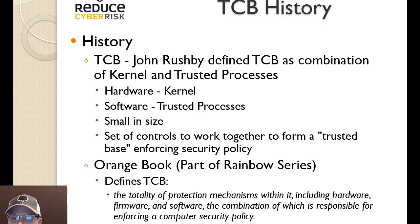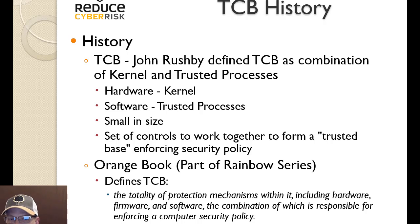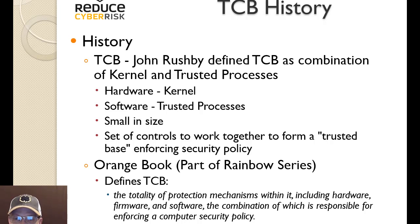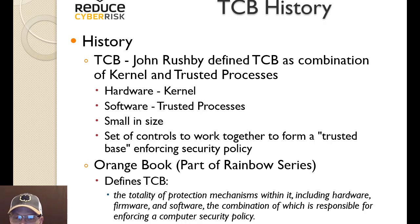The Orange Book, part of the Rainbow Series, defines the TCB as the totality of protection mechanisms — including hardware, firmware, and software — the combination of which is responsible for enforcing a computer security policy. These policies are basically the rules set up to govern how security is put in place on a specific system. As a CISSP or cybersecurity professional, you may end up putting some level of policies in place, which are written documents specifying how things need to be handled.